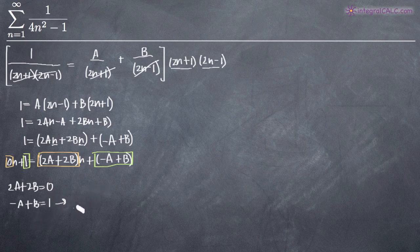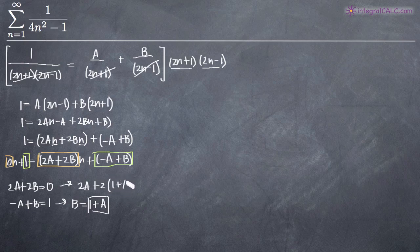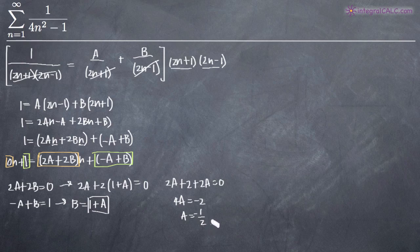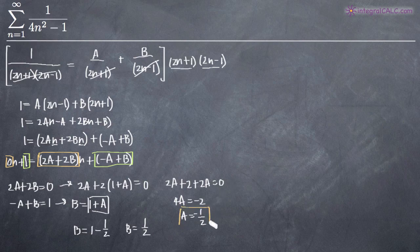Now let's solve this system of simultaneous equations. From the second equation, adding A to both sides gives B equals 1 plus A. Substituting into the first equation: 2A plus 2(1 plus A) equals 0, which gives 2A plus 2 plus 2A equals 0, so 4A equals negative 2, and therefore A equals negative 1 half. Plugging that back in, B equals 1 minus 1 half, so B equals positive 1 half.